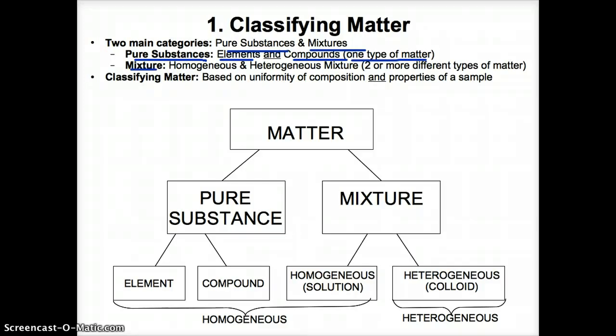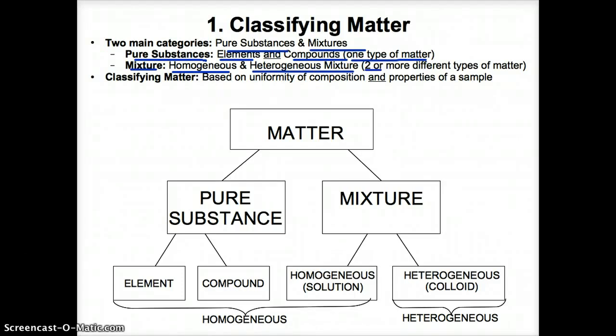On the other hand, a mixture — the two types of mixtures are homogeneous and heterogeneous. They consist of two or more different types of matter throughout, they have different compositions throughout, and generally they'll have different properties throughout.